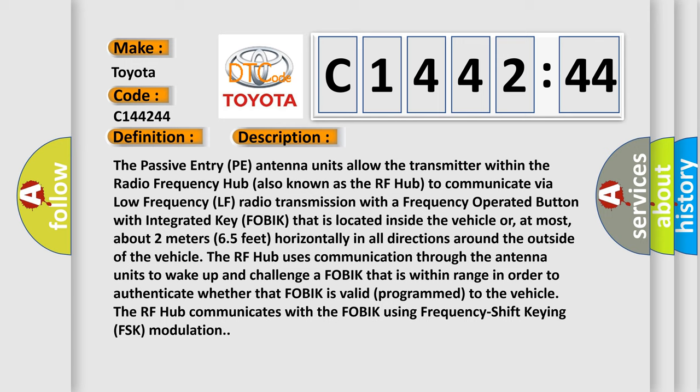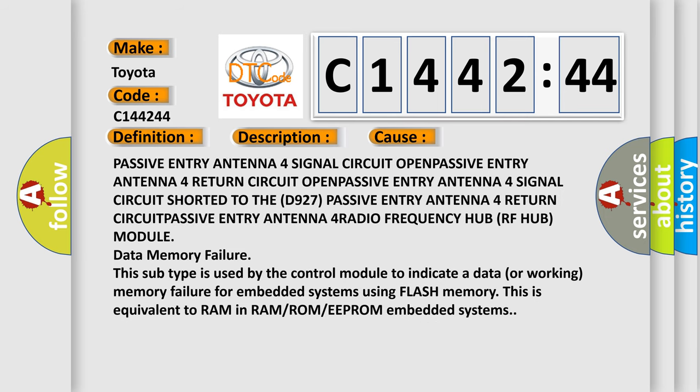The RF Hub uses communication through the antenna units to wake up and challenge a FOBIK that is within range in order to authenticate whether that FOBIK is valid (programmed) to the vehicle. The RF Hub communicates with the FOBIK using Frequency Shift Keying FSK modulation.